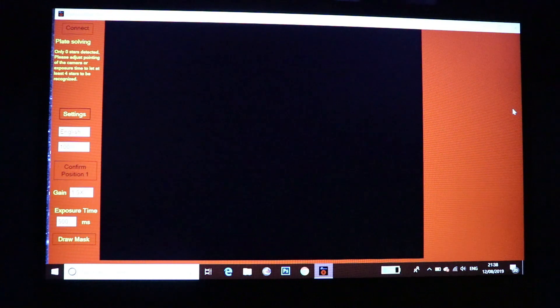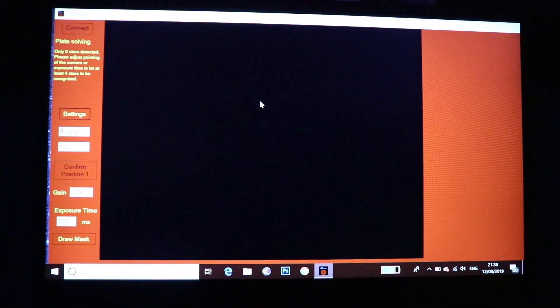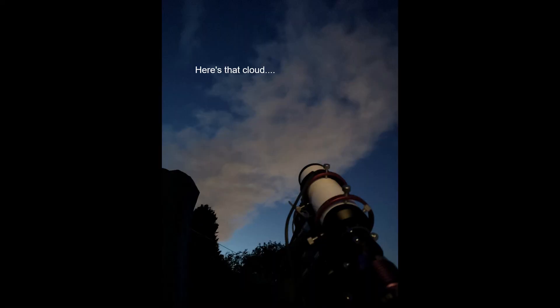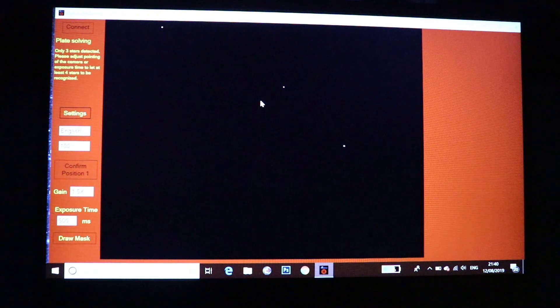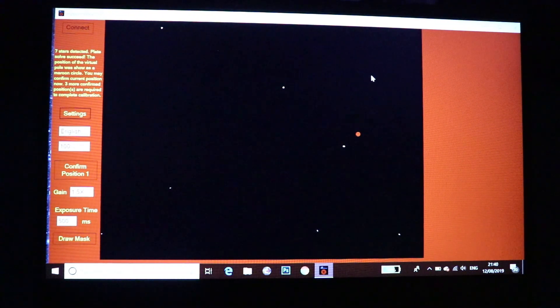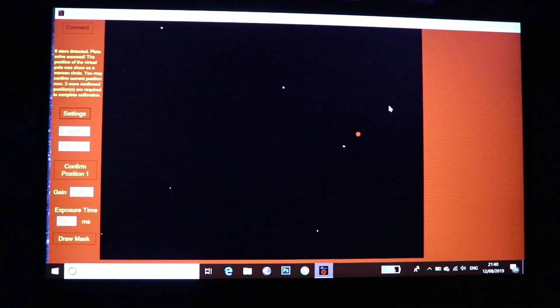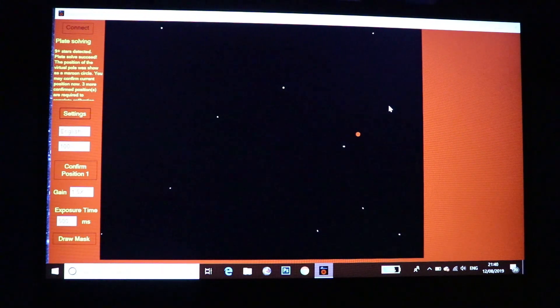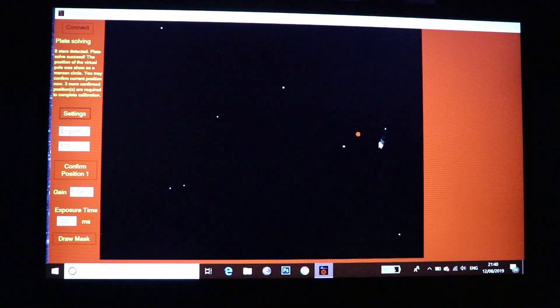So once you're connected it will start plate solving. There's a massive chunk of cloud just sat right over where Polaris should be at the moment, so I'm going to pause. Basically the cloud is moving and as it's moving more stars are being detected and you can see a red dot here. Now that is the pole but I'm going to wait for a few more stars to appear. So I think any minute now we'll be ready to carry on with the next step.